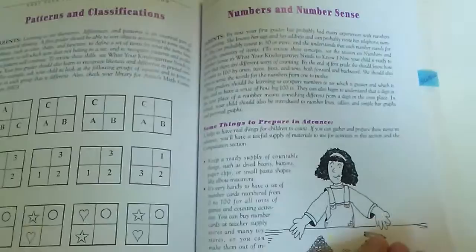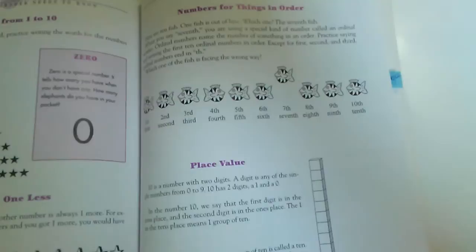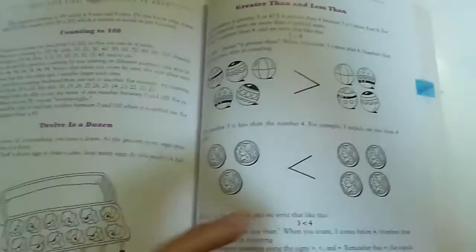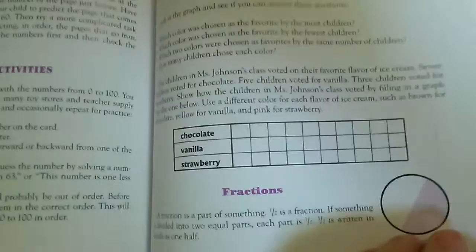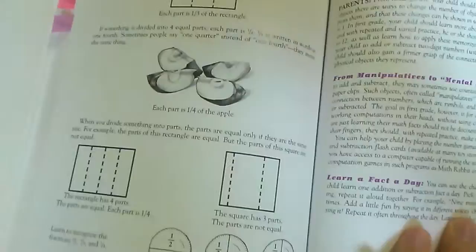Okay, some suggested resources again. Patterns and Classification, Numbers and Number Sense, some things to prepare in advance - you know, a lot of hands-on activities, so that's great. Numbers from One to Ten, One More and One Less, Numbers to Things in Order, Place Value, Place Value from 21 to 100, Counting to 100, 12 is a Dozen, Greater Than and Less Than, Before and After, Number Flashcards, Activities, Using Graphs, Fractions.